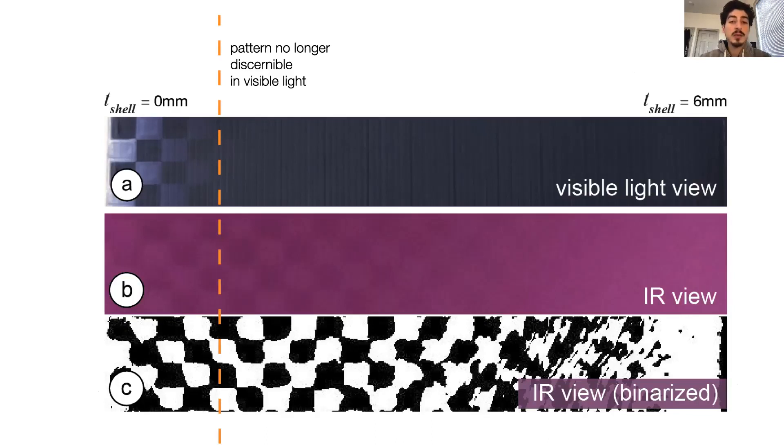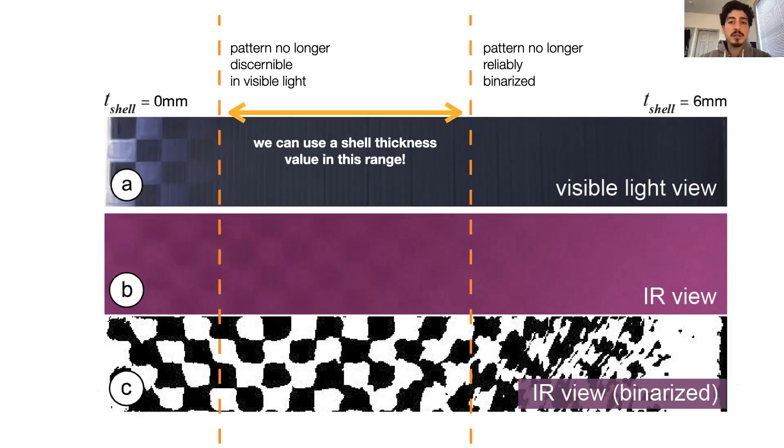But as you see, it gets worse with increasing thickness. So at a certain point, the pattern is no longer reliably binarized. These two limits give us a range of possible values for the shell thickness. For the sake of best detection, we use the smaller limit value for our prints.